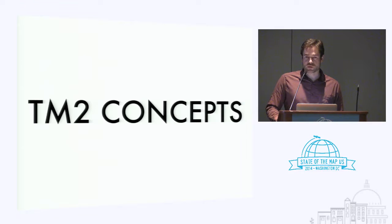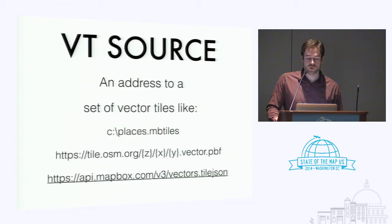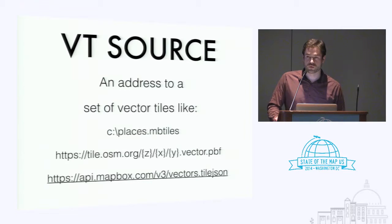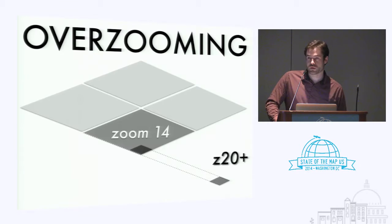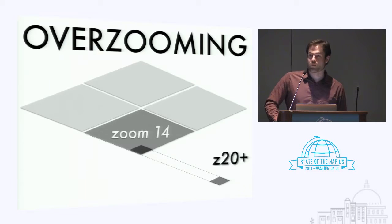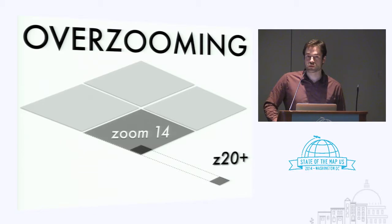Building upon vector tiles, TileMill 2 introduces other concepts. A vector tile source is a term we use in TileMill 2 to describe any addressable set of vector tiles — more than one vector tile that you might want to make a map with. It could be an mbtiles database that stores vector tiles instead of image tiles, or it could be a URL, or a URL to a tile JSON.